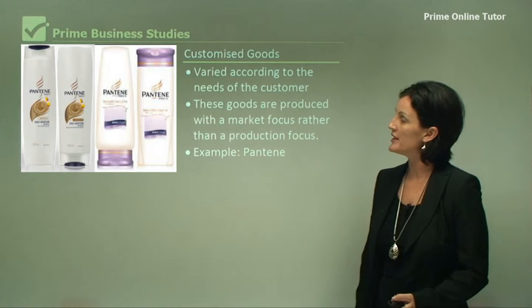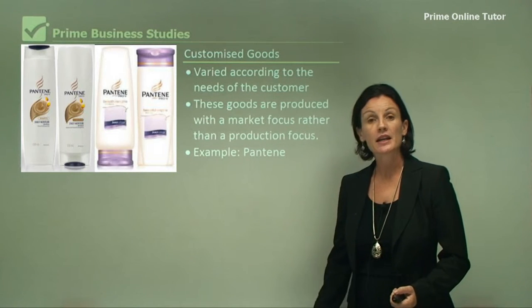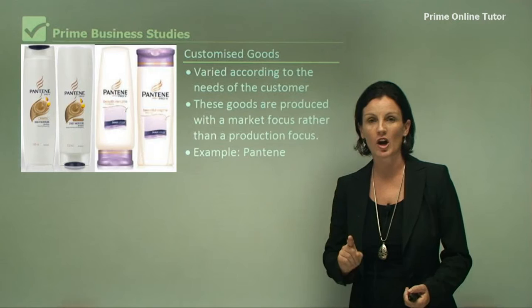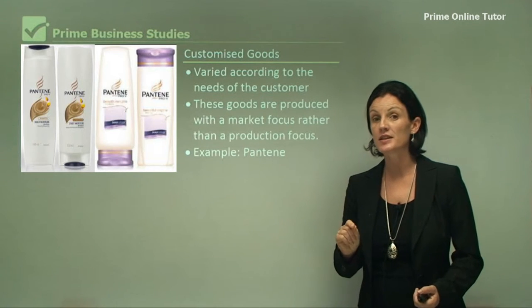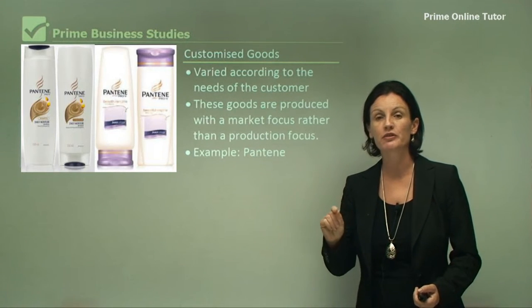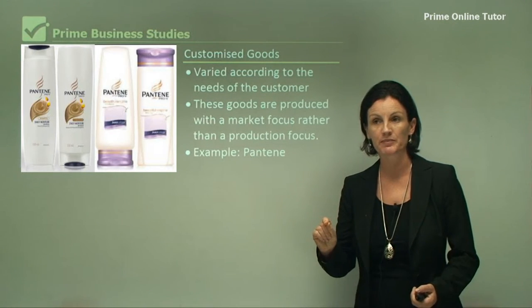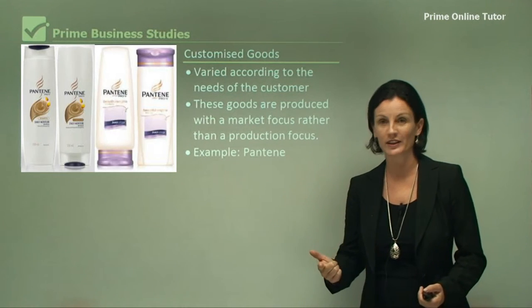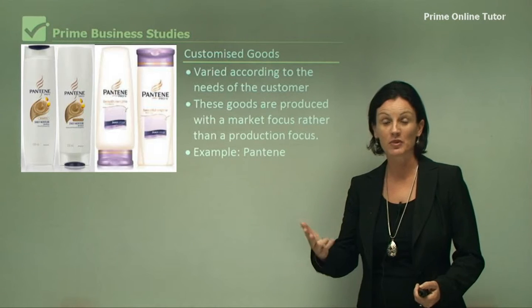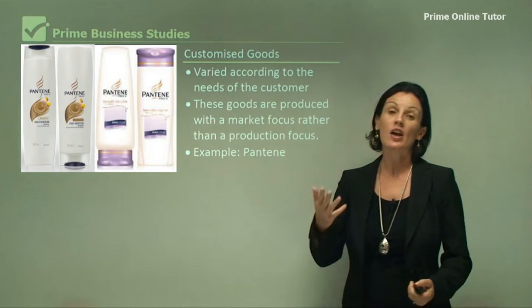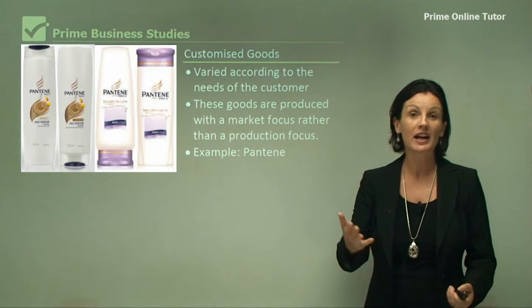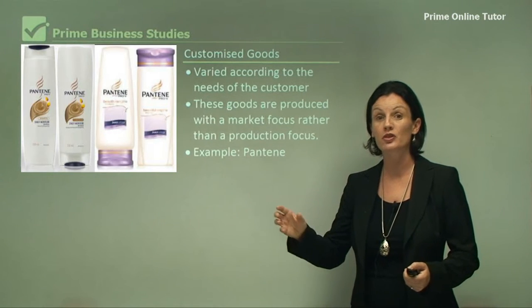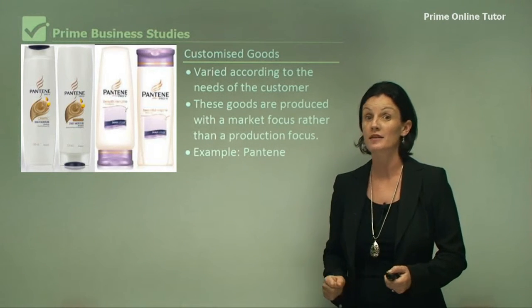A great example of this is Pantene. Pantene produces shampoo — they don't produce one type of shampoo. They customise their product to suit the different consumers. Some consumers have dry hair, some have oily hair, some have permed hair, coloured hair, etc. So Pantene has produced a number of different types of shampoo to suit their customers.